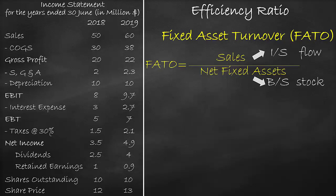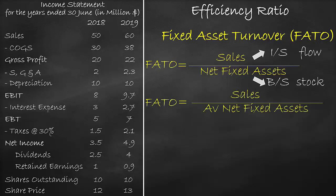In summary, any time you find a financial ratio that includes an item from an income statement and an item from the balance sheet, you will use the income statement and get the average of the two balance sheet items. So, we can rewrite the fixed asset turnover ratio as sales divided by average net fixed assets.